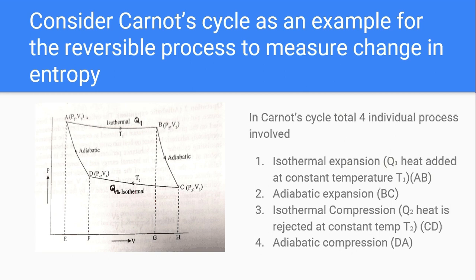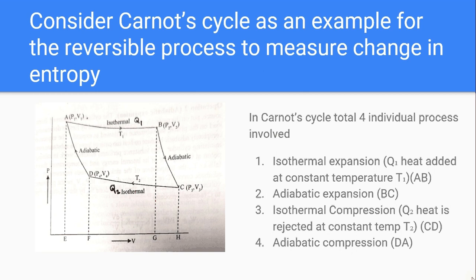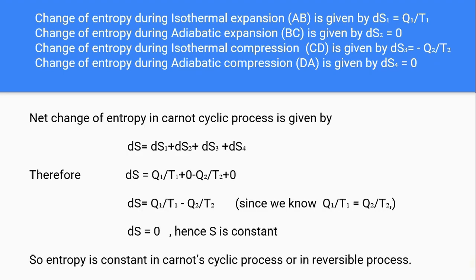The first of the four processes is isothermal expansion. During isothermal expansion, we place the cylinder on the source, and the working substance absorbs Q1 amount of heat from the source at a constant temperature T1. Temperature remains constant at T1 during this isothermal expansion.